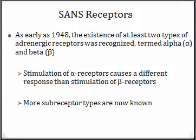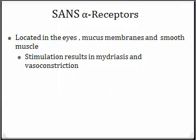Stimulation of an alpha receptor causes a different response than stimulation of a beta receptor. When you stimulate an alpha receptor within the SANS, think vasoconstriction. Alpha receptors are located in our eyes, mucous membranes, and smooth muscle — including blood vessels, which can constrict and dilate. Stimulation of an alpha receptor results in mydriasis, which is pupil dilation, and vasoconstriction.